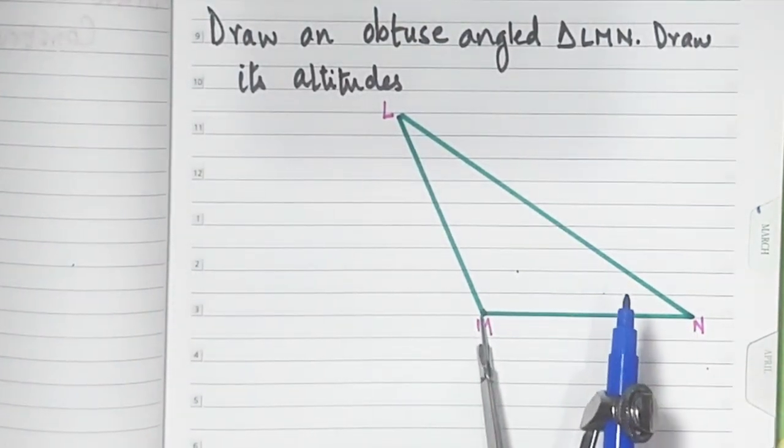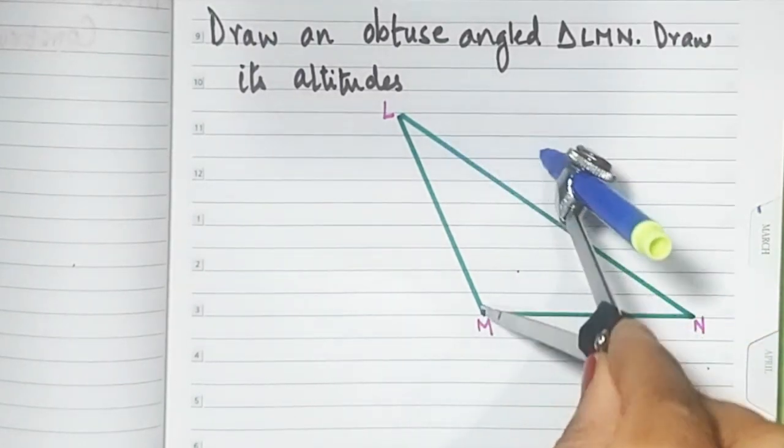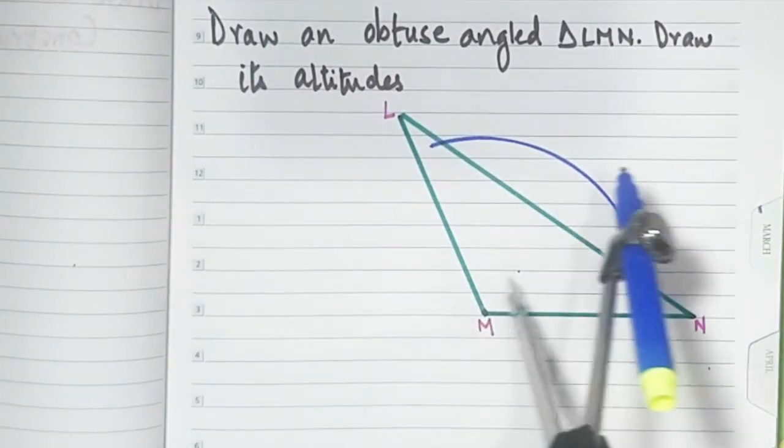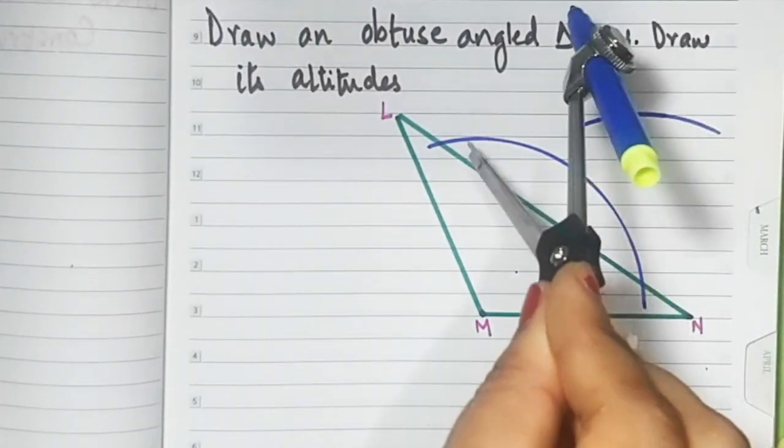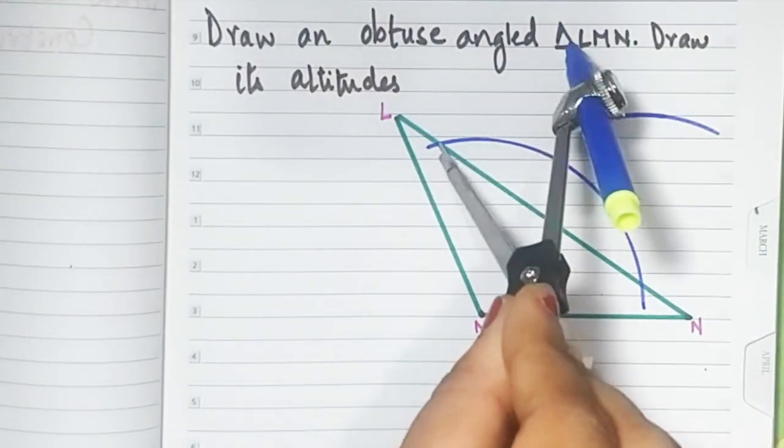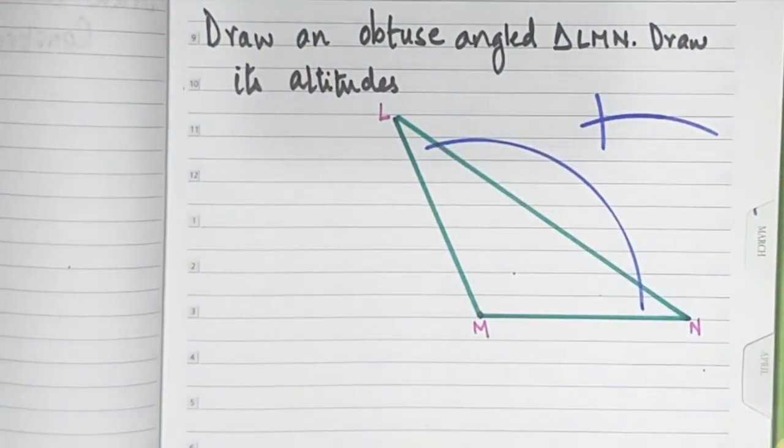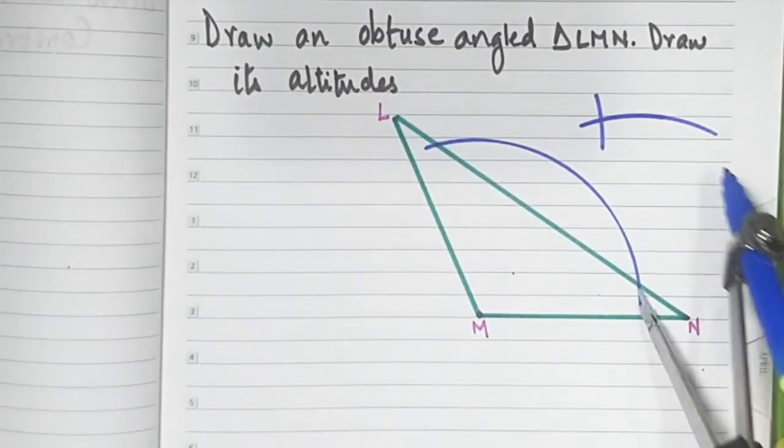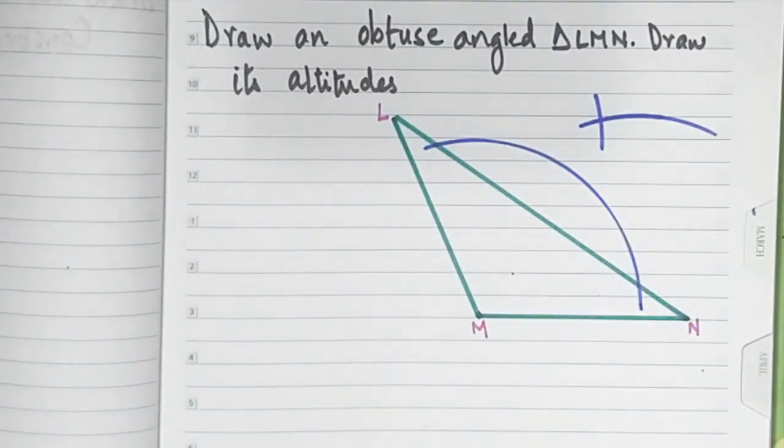Keep your pointer at M first. Remember, when it comes to altitude, make a smiling face. Draw an arc from this point, then cut that arc. So the first step is to keep your pointer at M, draw a smiling face. At this point draw an arc, and from this point cut that arc. Now that's done.